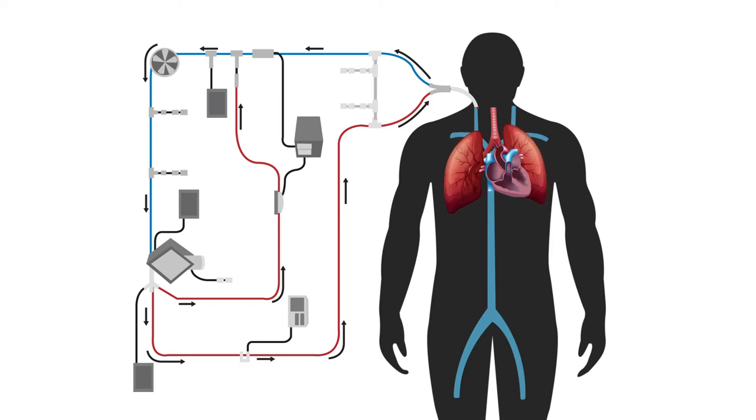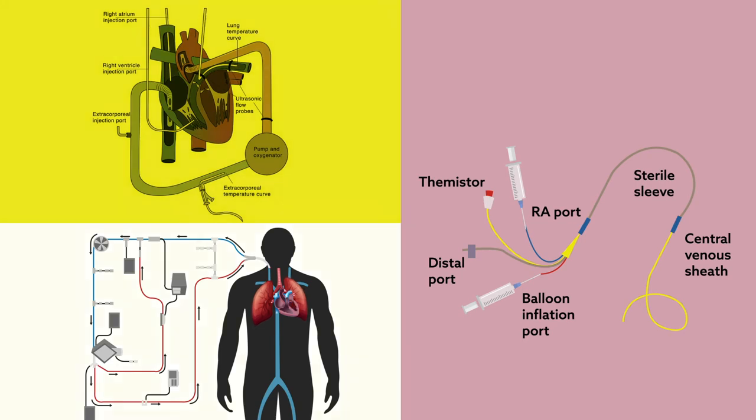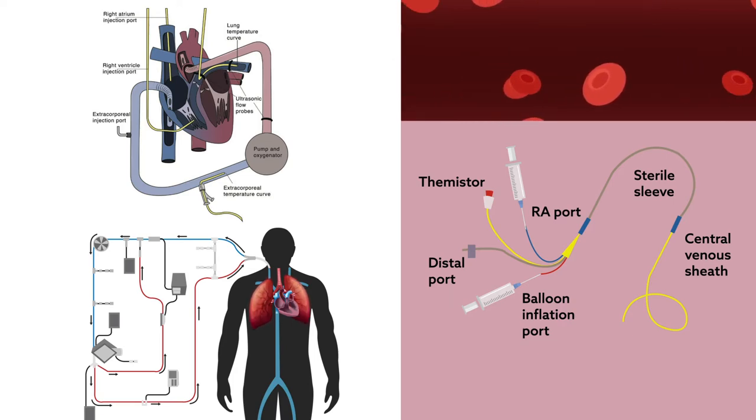To address this issue, the Swiss scientists placed a thermistor in the pulmonary artery and another in the ECMO circuit, to measure how much of the indicator solution passed through each compartment, allowing them to calculate the pulmonary blood flow.